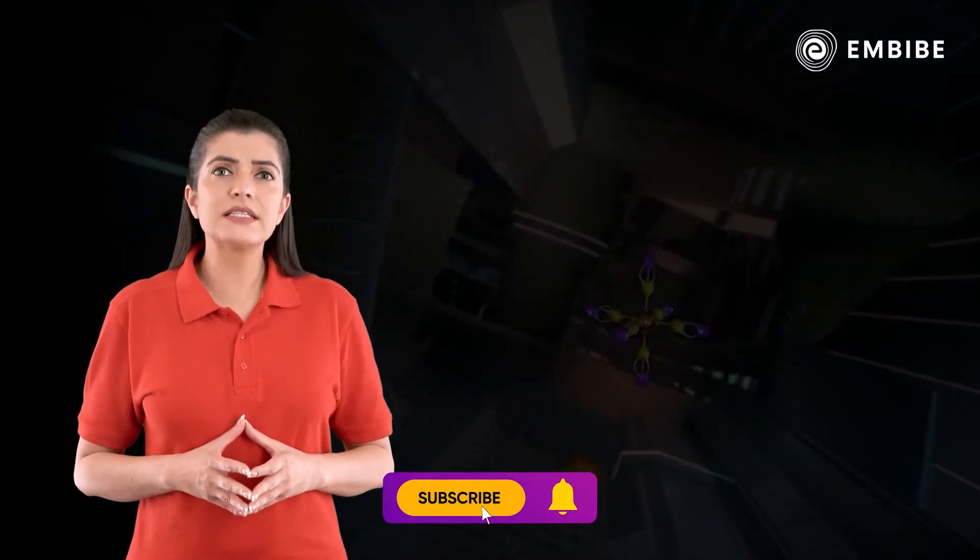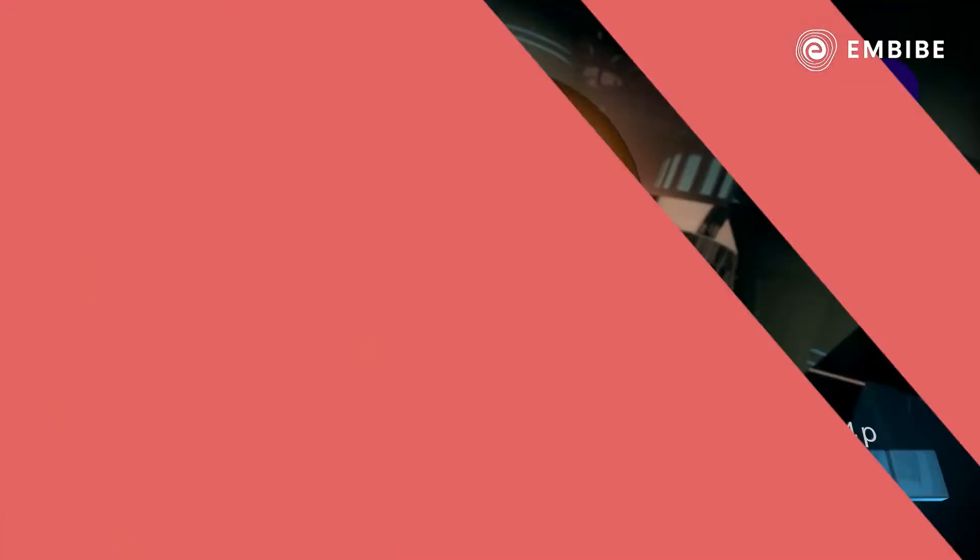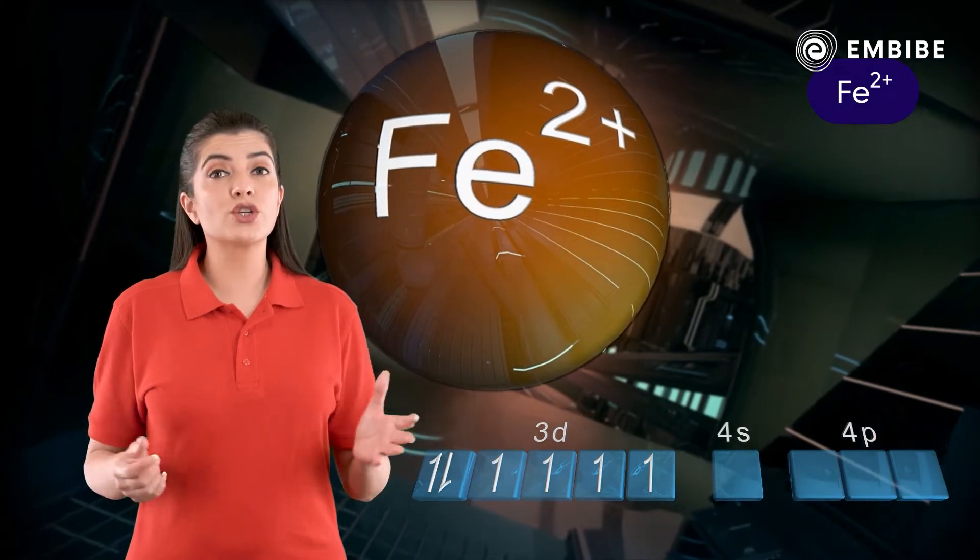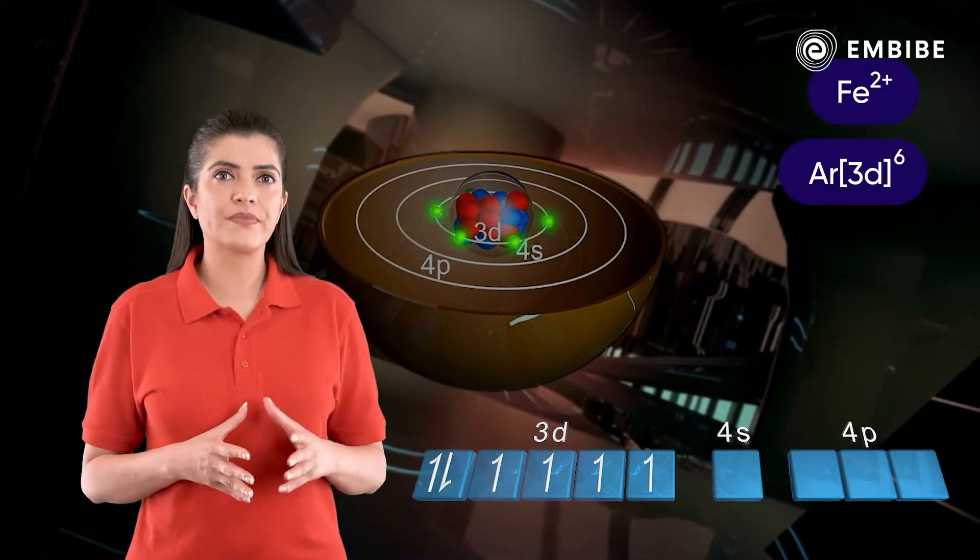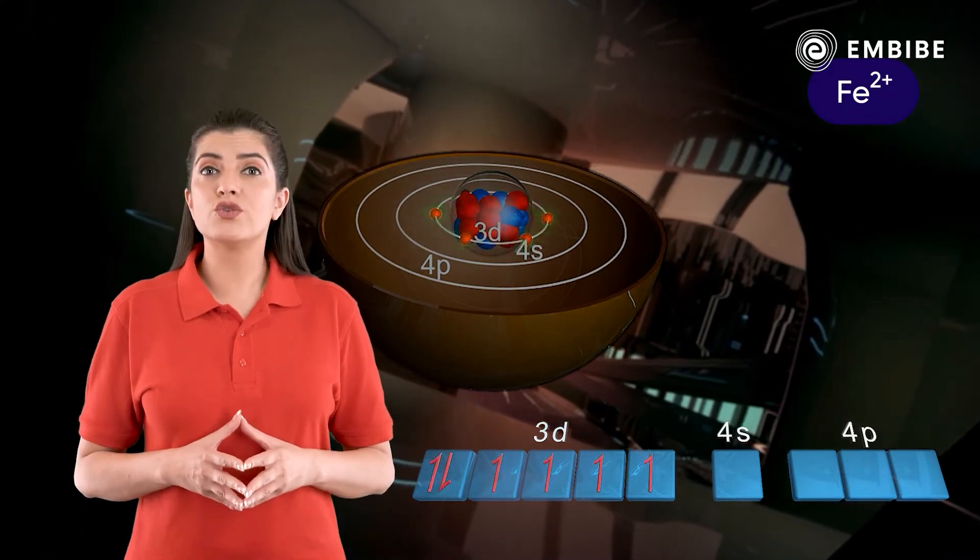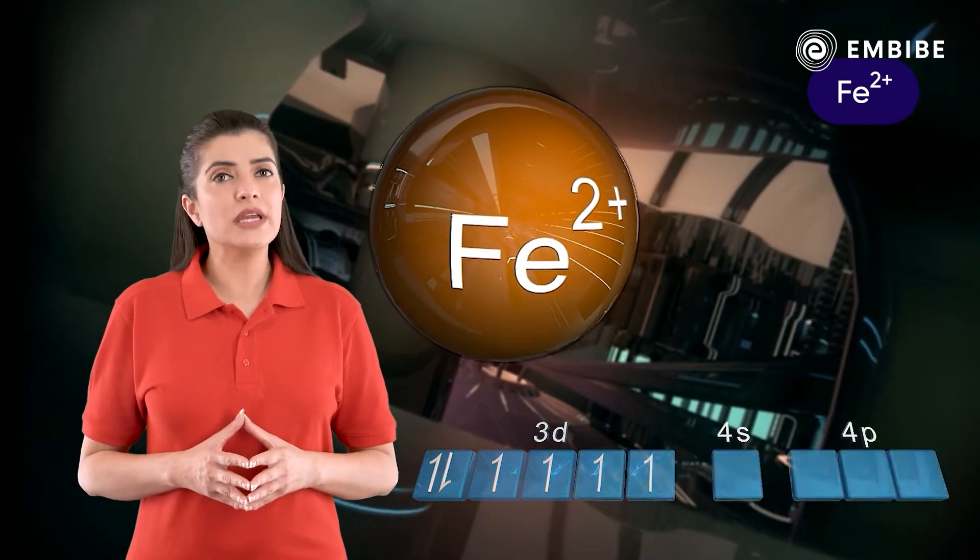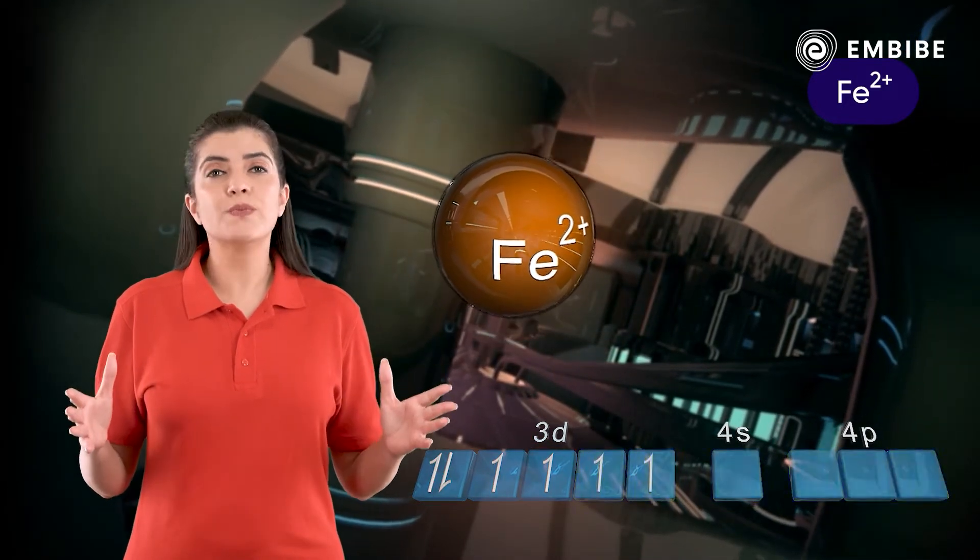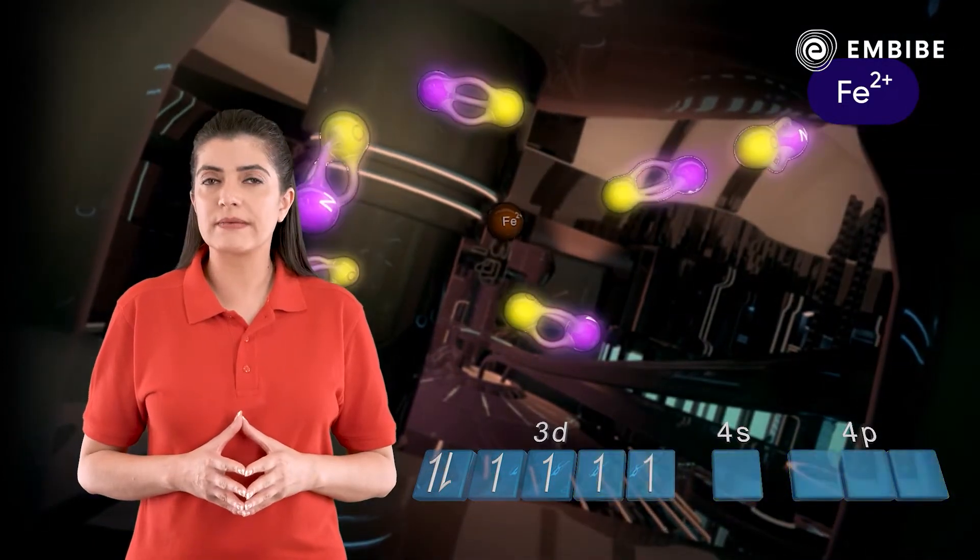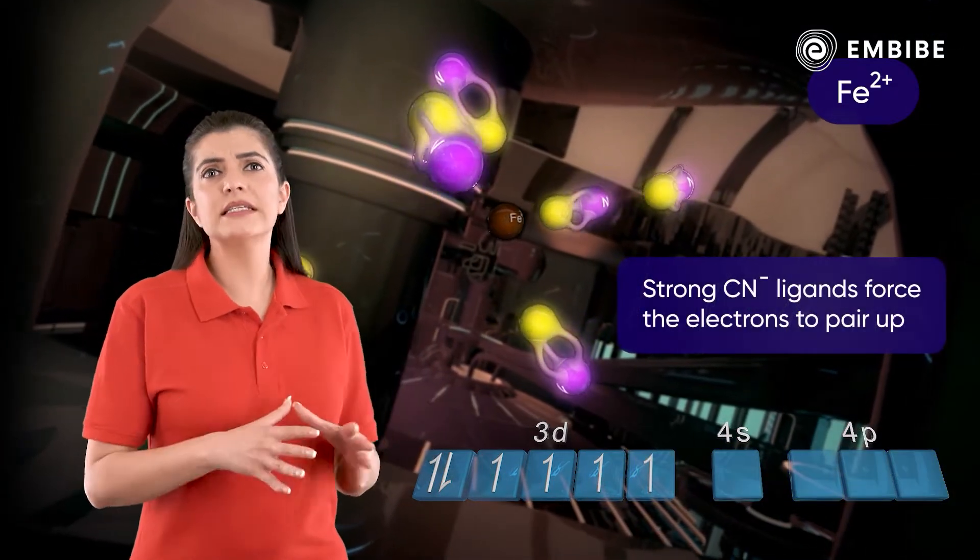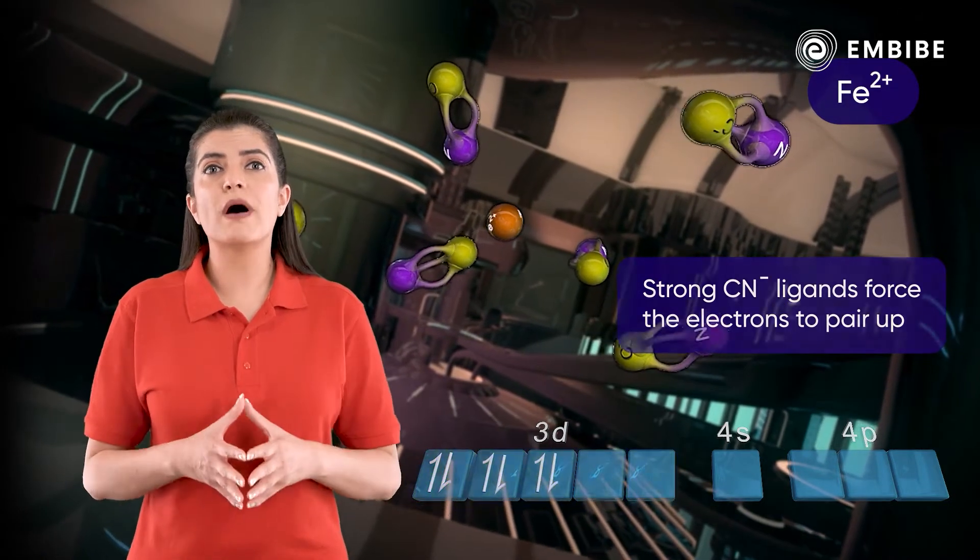Let us first consider the possibility of d2sp3 state of hybridization. The electronic configuration of Fe2+ is [Ar]3d6. The six electrons are distributed in 3d orbitals as shown. For d2sp3 hybridization, the Fe2+ ion should possess two empty 3d orbitals. The strong CN- ligands force the six electrons to pair up and occupy three of the 3d orbitals.